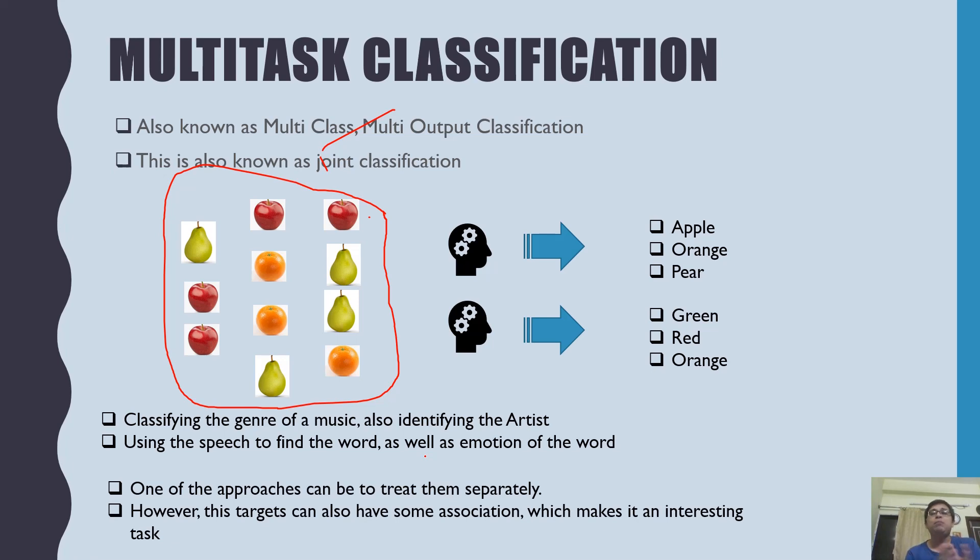One of the approaches can be to treat them separately. However, the targets can have some association. Like here, if it is an apple, you know most probably it will be red. If it is an orange, then the color is also going to be orange, which makes it a very interesting task.